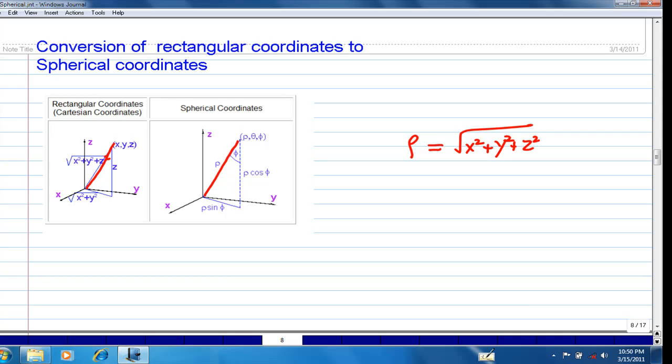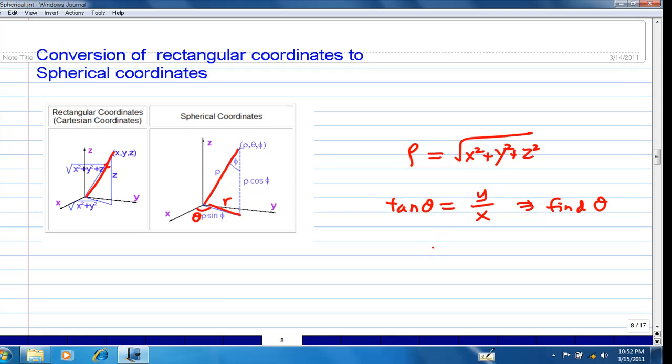And then the second parameter is theta here. We know tan θ is y over x, just like cylindrical coordinates. So from here we can find theta. How about phi? If you look at cos φ, it is z over rho. So from here you can find out phi.